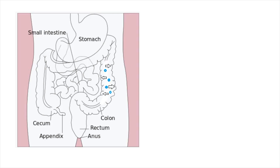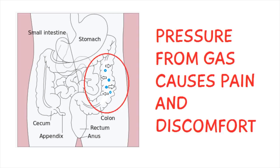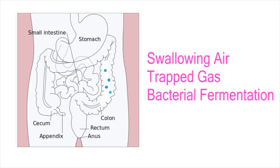Intraluminal gas is gas which is present inside the lumen of the bowels or the intestines, and the cause of it can be due to things like swallowing air, gases in the intestines not being able to diffuse properly, and even the fermentation of short chain carbohydrates by bacteria.